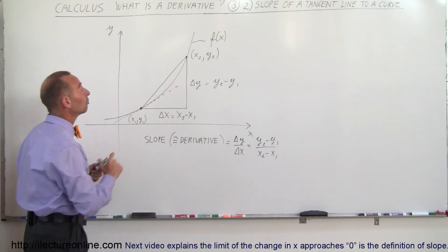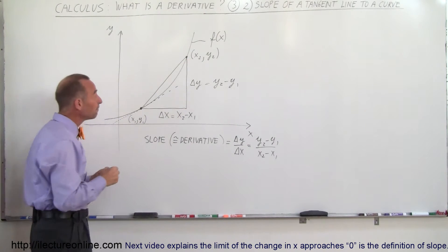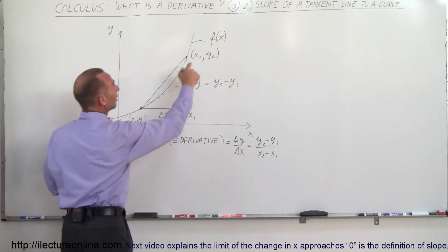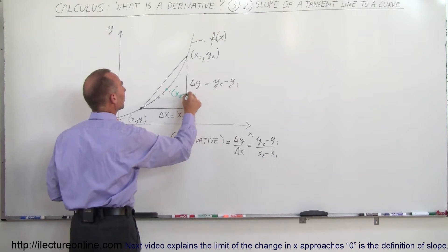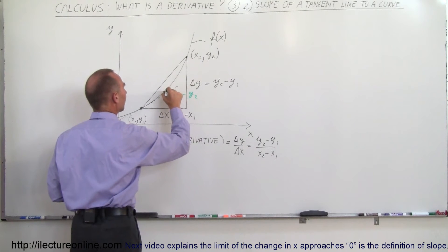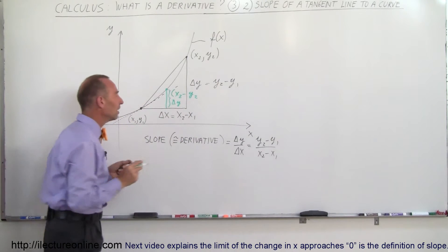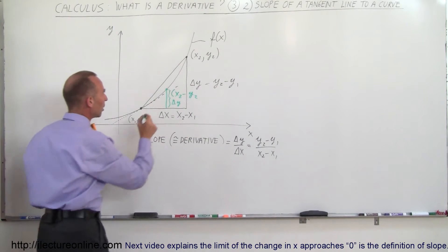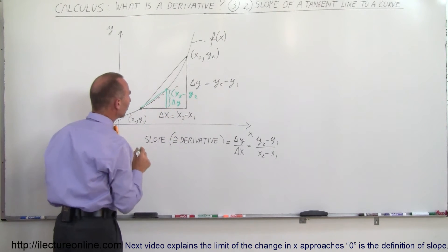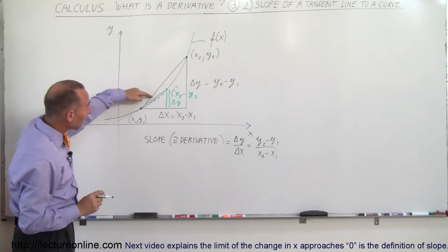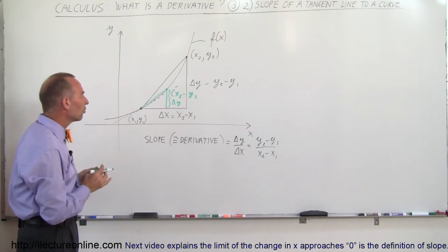So how can I do a better job of that? Maybe what I can do is bring my point in a little bit closer. Instead of taking my second point and placing it up there, maybe I'll take my second point and place it closer and call this my new x2, y2. My new triangle looks like that, and this distance right here is my new delta y. You can see now that if I draw a straight line between that point and this point, the slope of that line is almost the same as the slope of my tangent line — not quite, but almost.